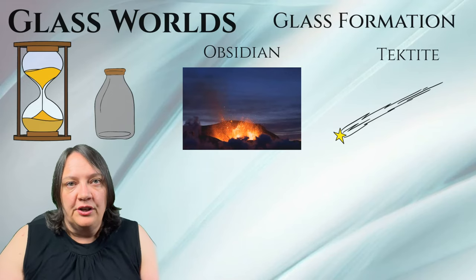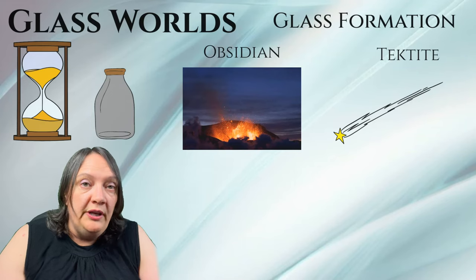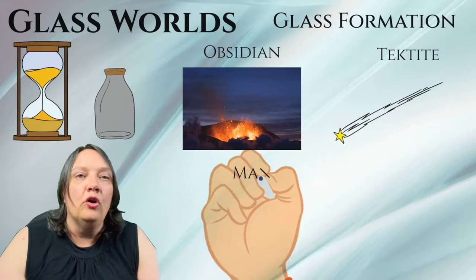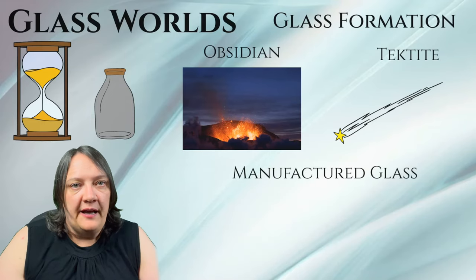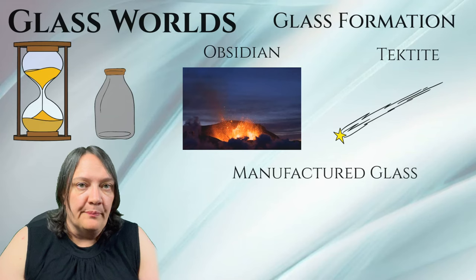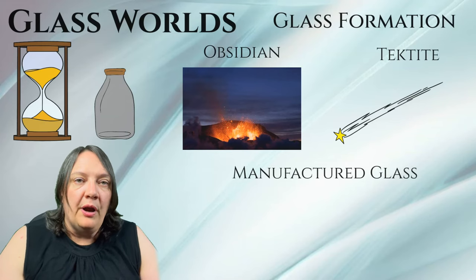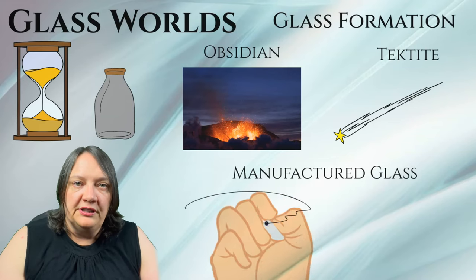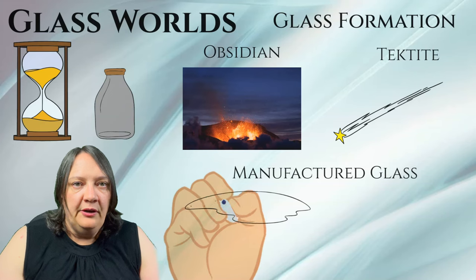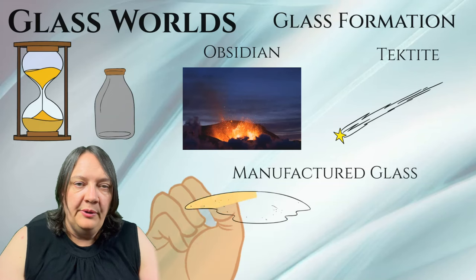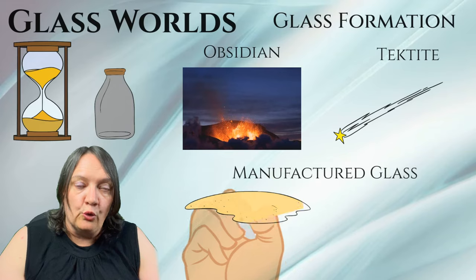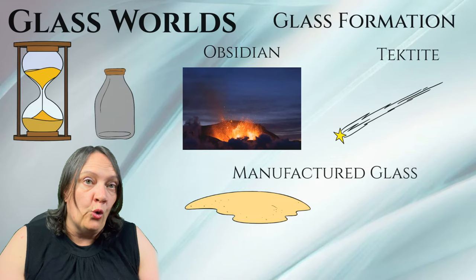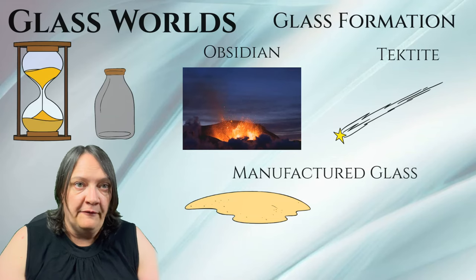So we can see that glass does occur naturally, but we also make glass. Glass is manufactured through a process that involves melting a mixture of raw materials — primarily silica — and then cooling and shaping the molten material. The appearance, properties and quality of the glass can be influenced by the choice of raw materials as well as the manufacturing process.